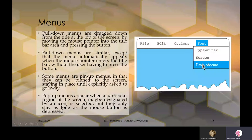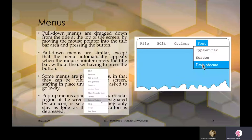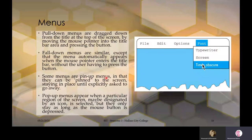Pull-down menus are dragged down from the title at the top of the screen by moving the mouse pointer into the title bar area and pressing the button. Fall-down menus are similar except the menu automatically appears when the mouse pointer enters the title bar, without the user having to press the button.